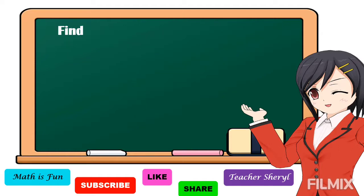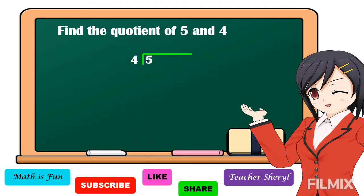Next example: find the quotient of 5 and 4. To get the answer, we first write it in division format. 5 divided by 4 is equal to 1. One times 4 is equal to 4, and 5 minus 4 is equal to 1.